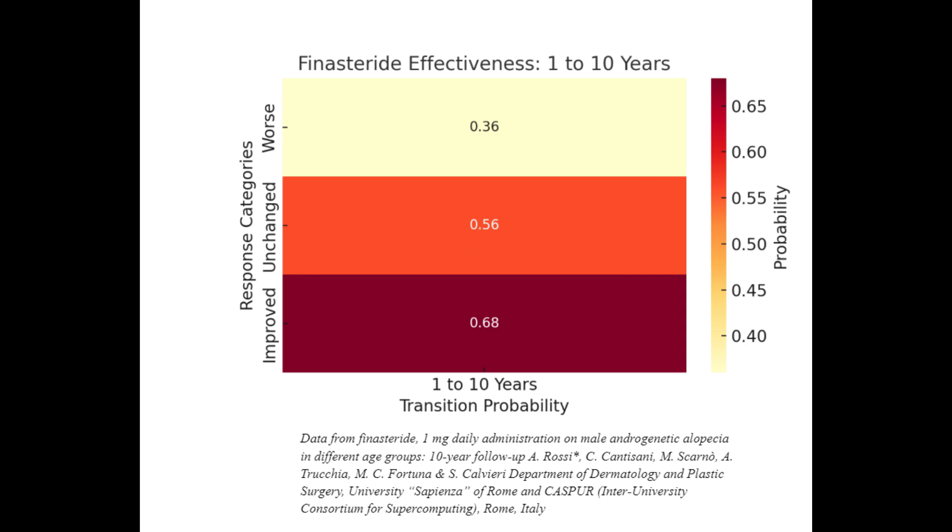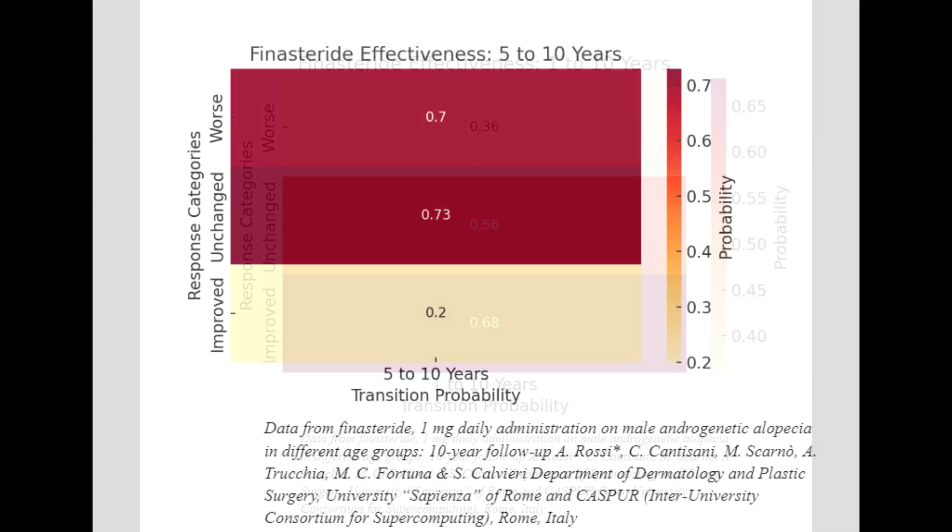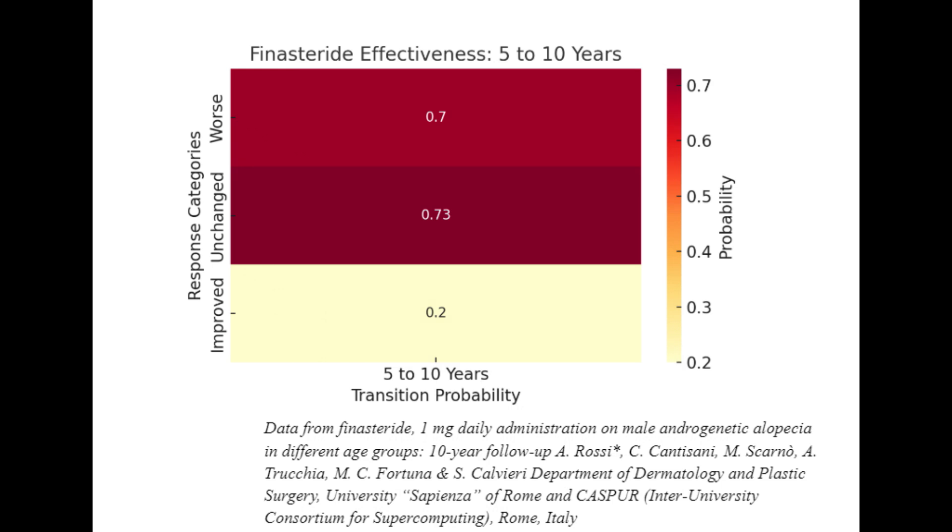Now, the heat map comparing 5 to 10 years. This heat map focuses on the changes or stability in the patient's condition from year 5 up to year 10.